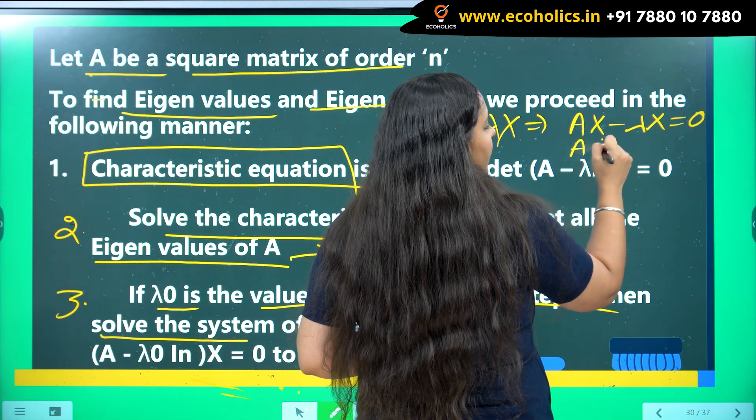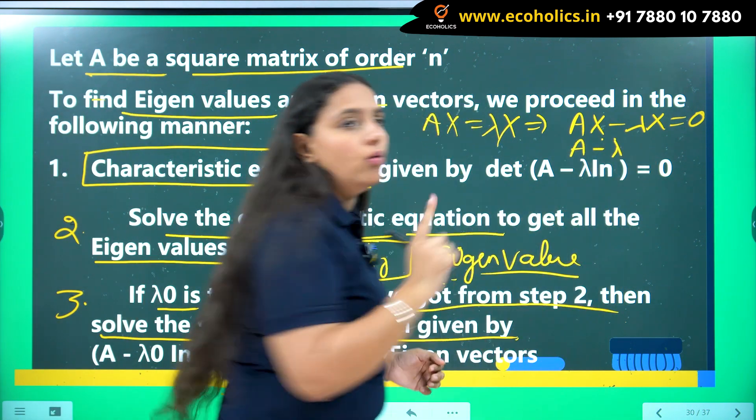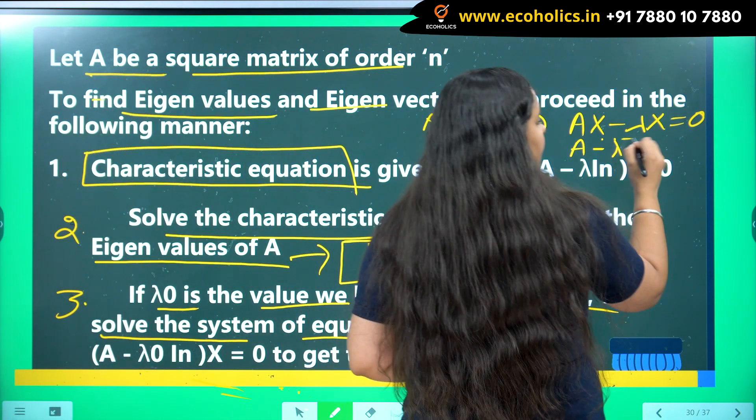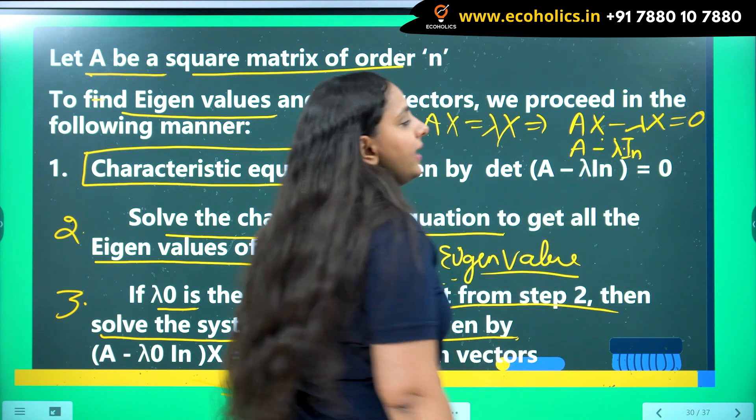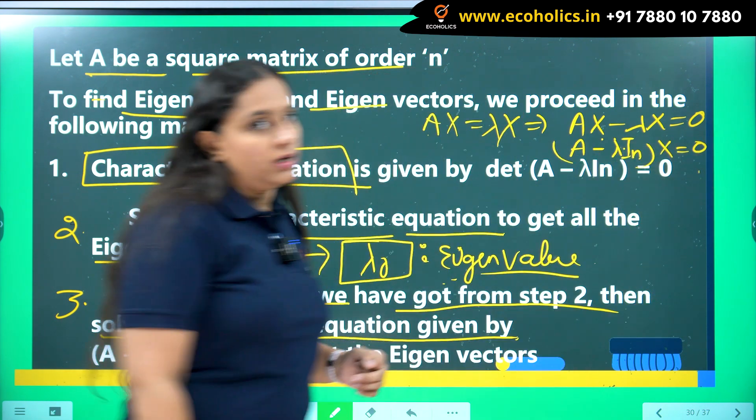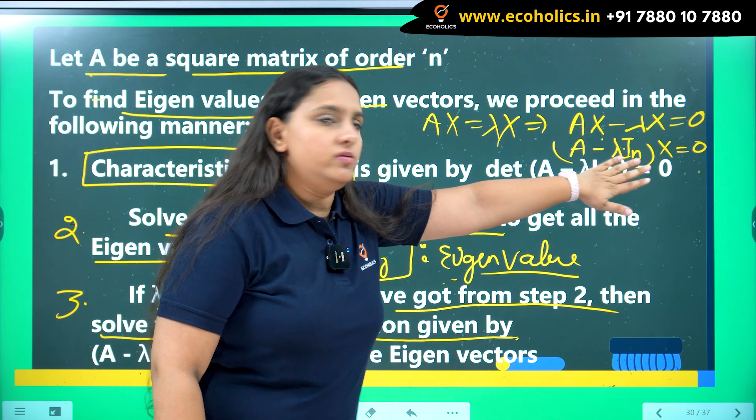From here, if I do this thing, A minus lambda, I know I cannot subtract lambda from A because lambda is scalar. So I can subtract lambda into In and x as common. So it's a system of linear equations. So if I solve this...